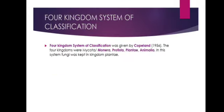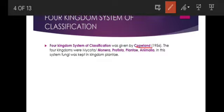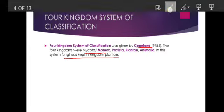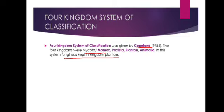Then came the four kingdom system of classification, proposed by Copland in 1956. Copland introduced one more kingdom — Mycota or Monera — for prokaryotic unicellular organisms. However, in this system fungi were kept within Kingdom Plantae, which was the main drawback, since fungi are very different from kingdom Plantae. This wrong classification led to the four kingdom system also being discarded.